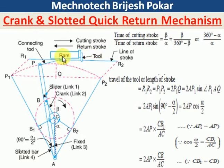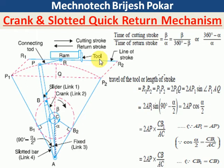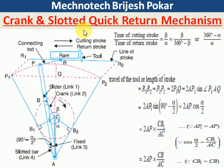In a shaping machine, the tool is connected with the ram. During the forward motion, or forward stroke, it is a cutting stroke — meaning the tool removes material. The return stroke is idle, so our goal is to make the return stroke as fast as possible. This is called the quick return mechanism.